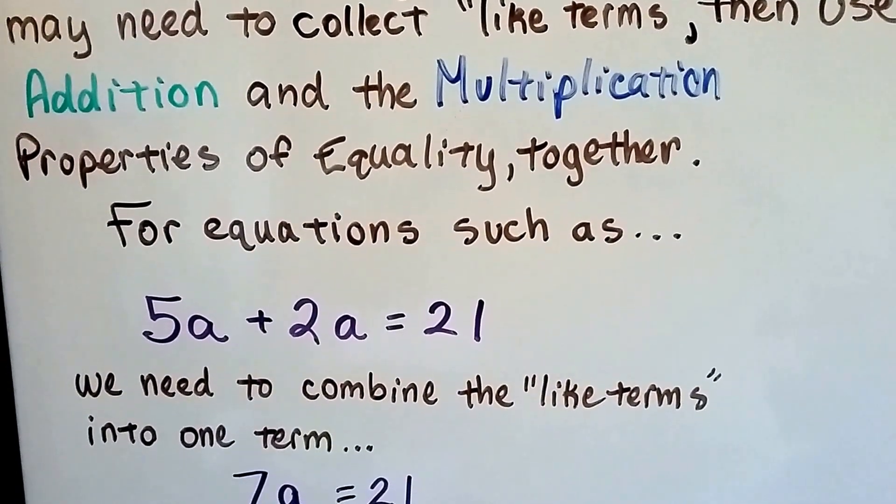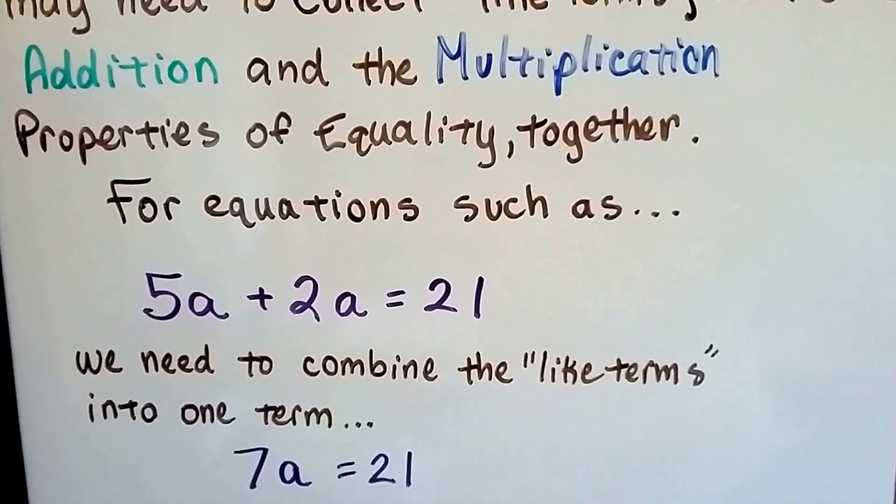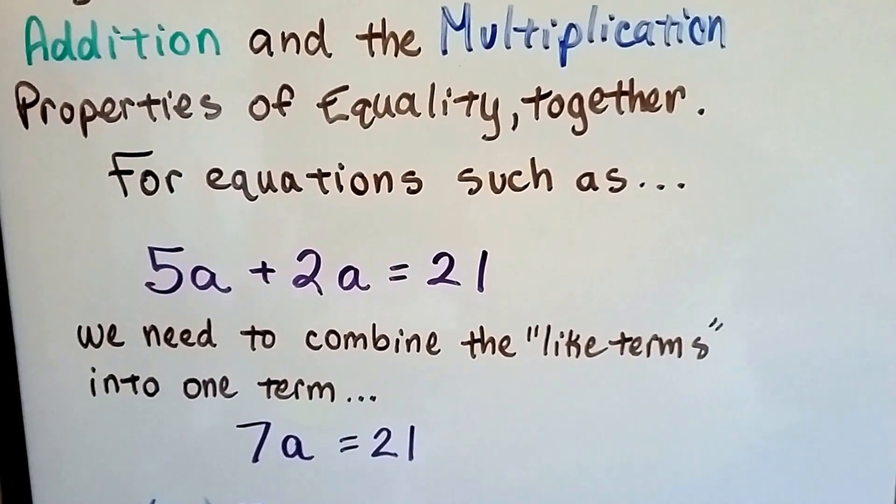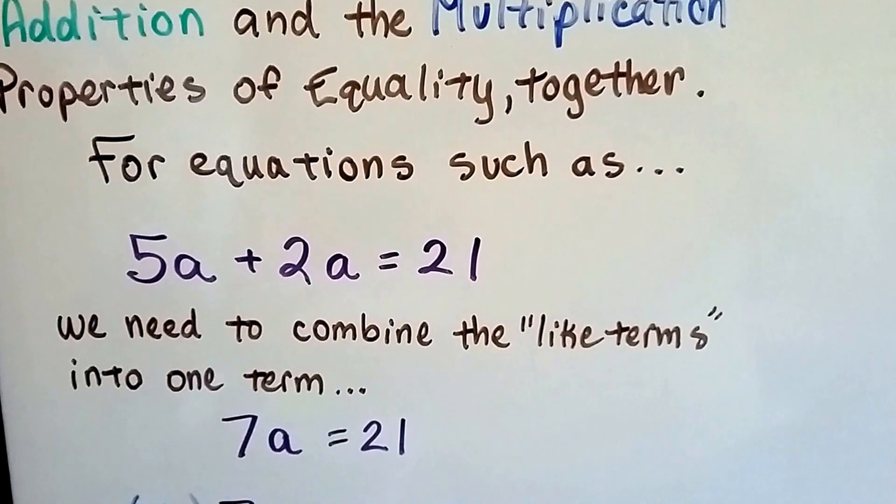For equations such as 5a plus 2a equals 21, we need to combine the like terms that have an a as a variable into one term. It would be 7a equals 21.